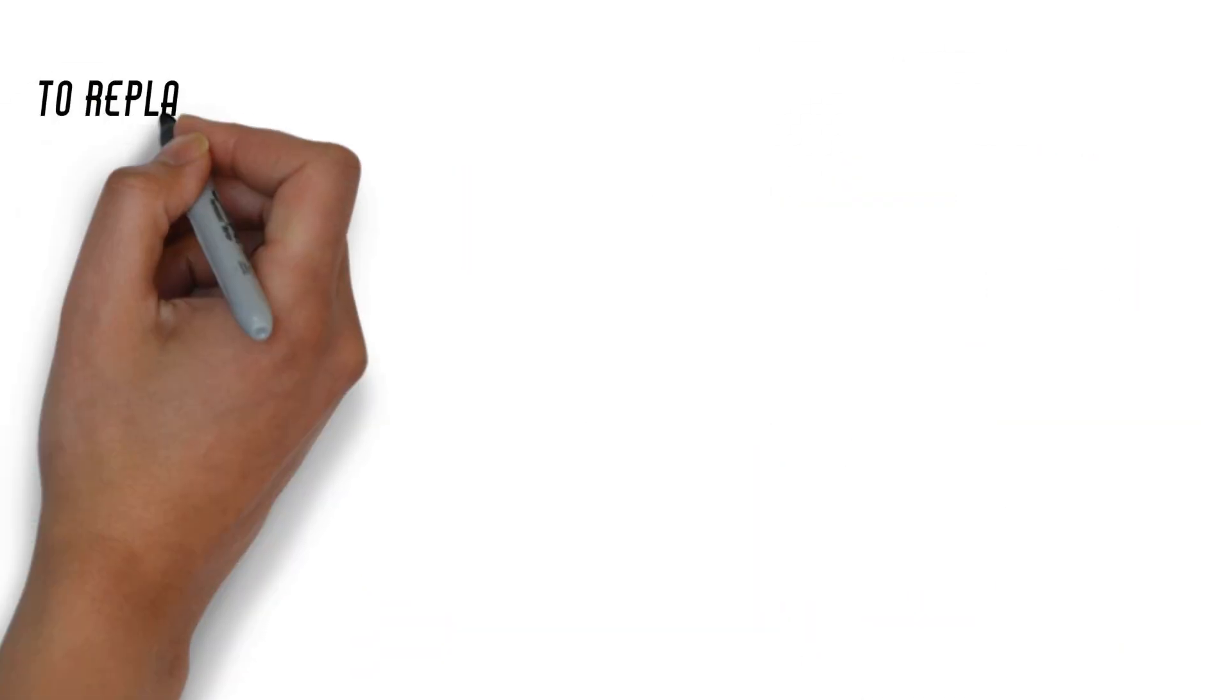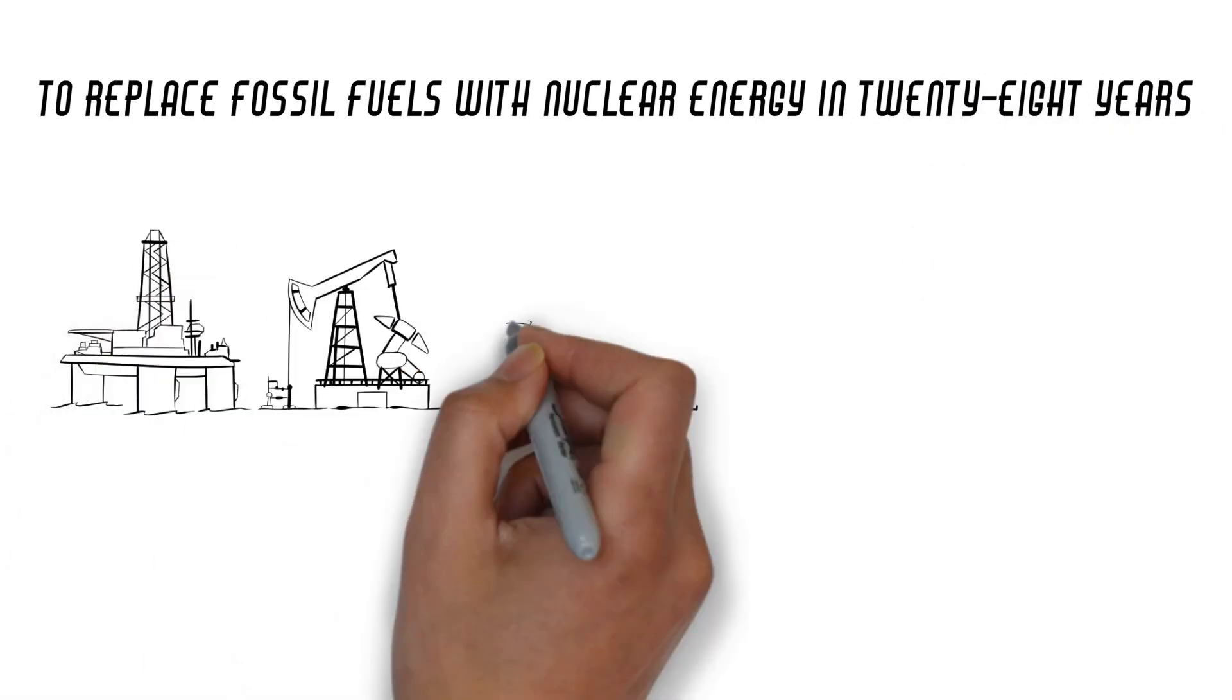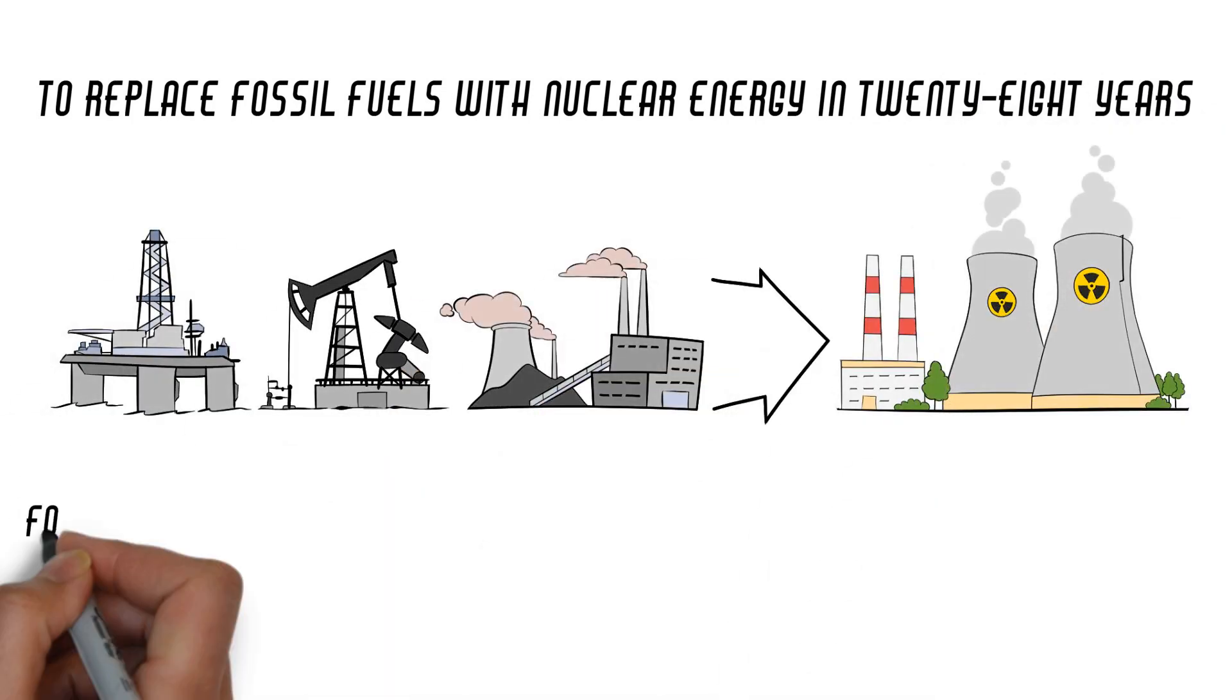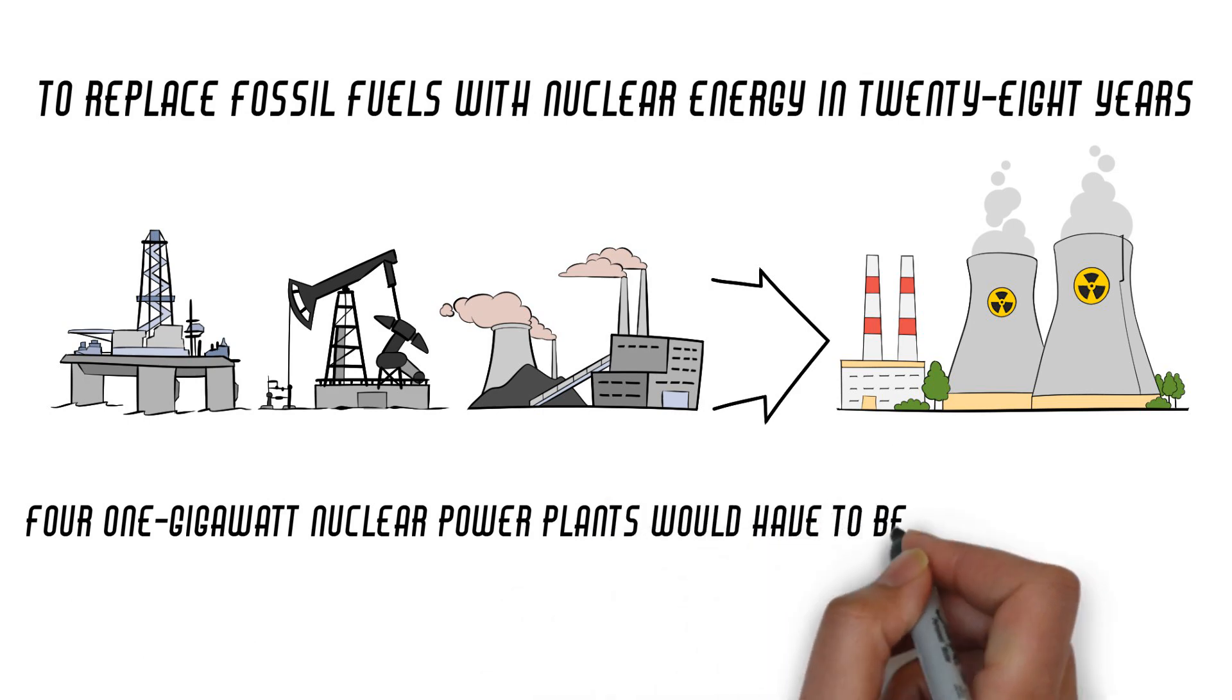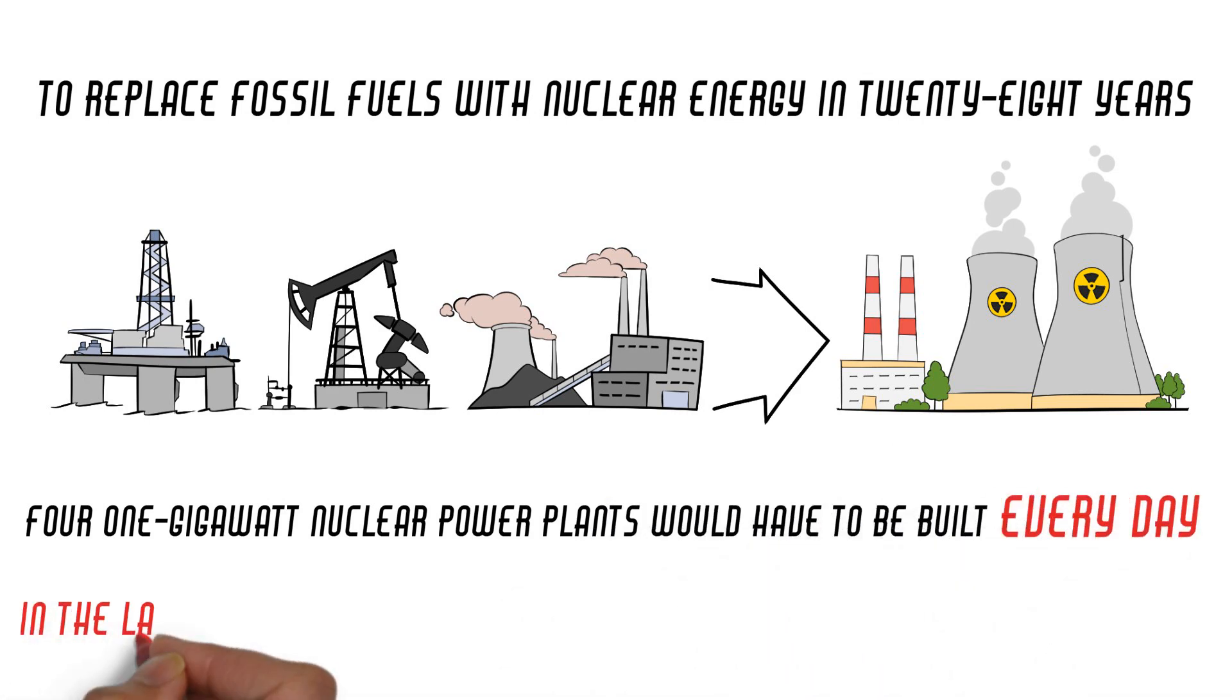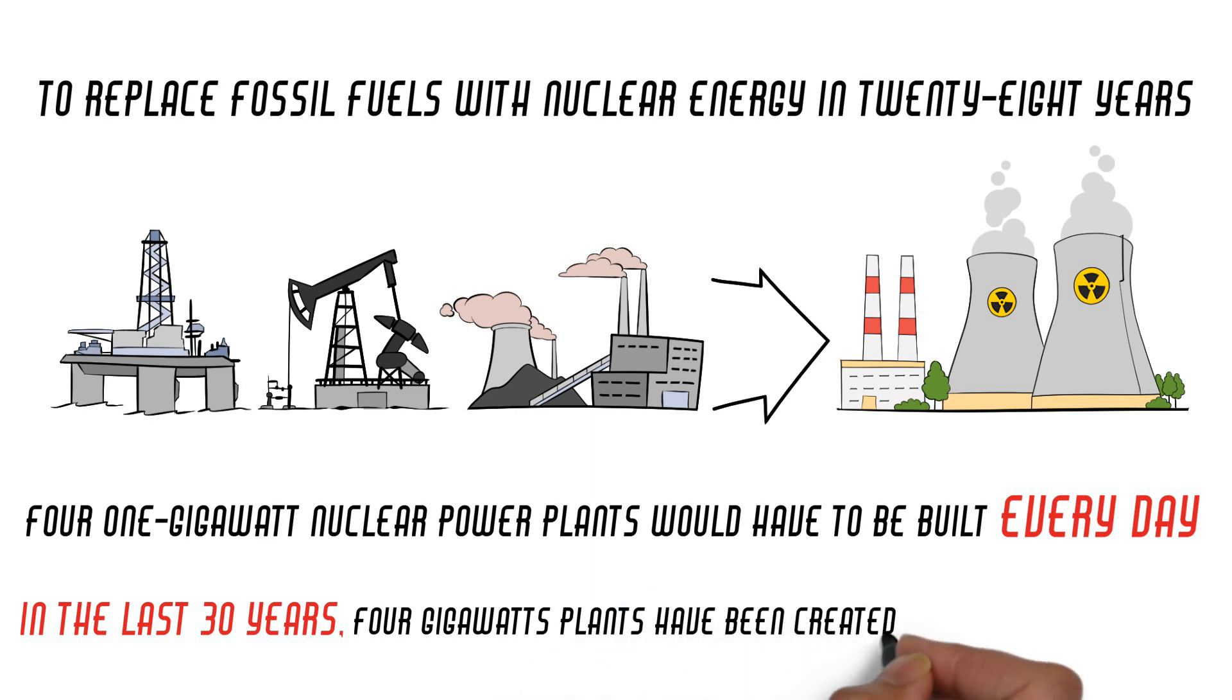For context, to replace fossil fuels with nuclear energy in 28 years, four 1-gigawatt nuclear power plants would have to be built every day. In the last 30 years, four gigawatts of nuclear capacity have been created only every 540 days.